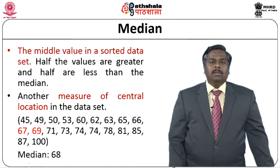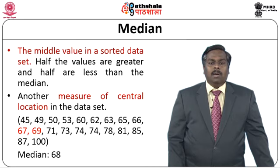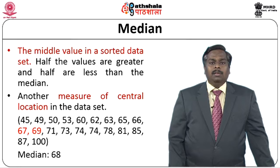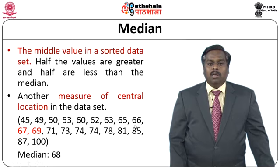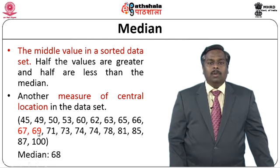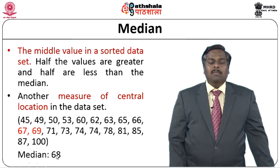The next metric is median. Median is fundamentally the middle value of the sorted data. When we have a set of data, we sort it in some order and identify the middle value, which is considered the median. Half of the values will be greater than the median and the remaining half will be smaller — it is another measure of the central location of a data set. In this given sample data set sorted in ascending order with 20 numbers, we take the middle two elements: 67 and 69. We divide the sum by 2, so 67 plus 69 divided by 2, giving a median of 68.